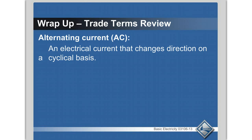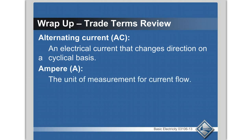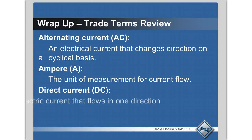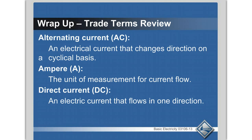Ampere — A. That's the unit of measurement for current flow. Remember, you use your meter to measure amps or amperes. Direct current — DC. It's electrical current that flows in one direction.